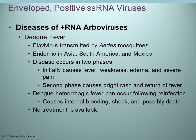Dengue fever is one of the arbovirus diseases, endemic in Asia, South America, and Mexico. The disease usually has two phases: the first with fever, weakness, and severe pain; the second with a bright rash and fever. No treatment is available. Re-infection can lead to dengue hemorrhagic fever, which involves internal bleeding that can lead to shock and death.